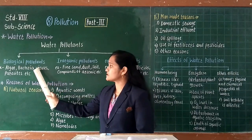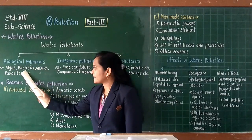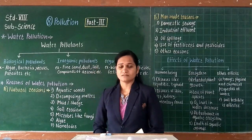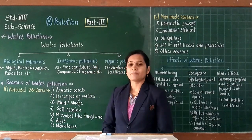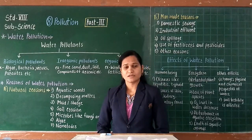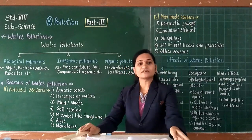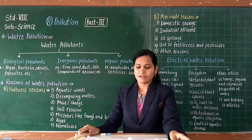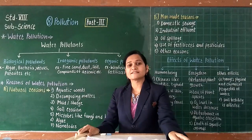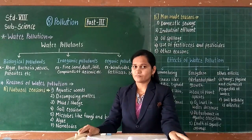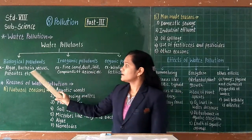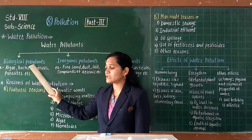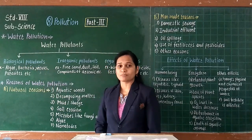Biological pollutants include algae, bacteria, viruses, and parasites. These all are examples of biological pollutants. Because of such biological pollutants, water does not remain potable — meaning we cannot drink it. And with that, it spreads different types of diseases also. So algae, bacteria, viruses, and parasites are all biological pollutants which cause water pollution.